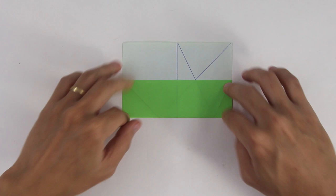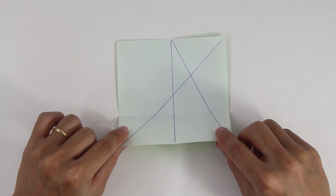Then, unfold the paper. Fold the top of the paper up to the line we just made and unfold.